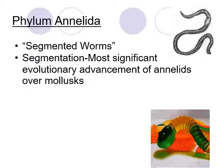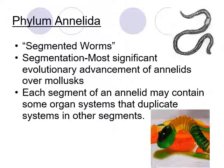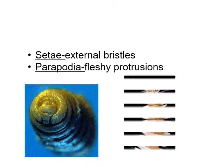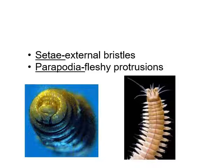Our next phylum is Annelida, which includes the segmented worms — the biggest example being the earthworm. Segmentation is a really significant evolutionary advancement; it gave organisms like the earthworm many segments that can duplicate systems. If they lose part of the organism, it might not be deadly because other segments may have those organs as well. Other features of annelids include setae, which are external bristle-like hairs — you can feel them if you touch an earthworm — that help with movement, sensing the environment, and gripping surfaces.